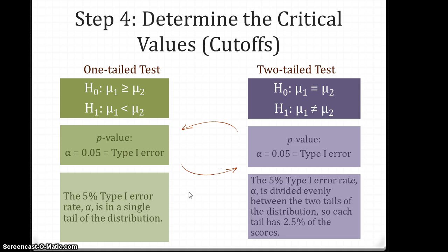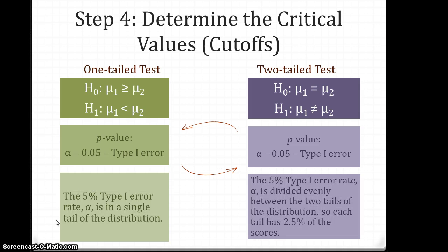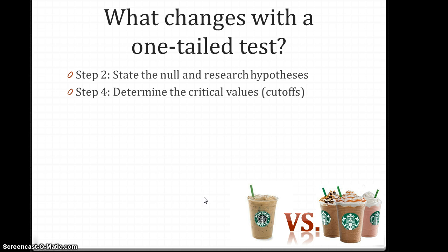With the one-tailed test, we put the entire 5% type 1 error rate, or alpha, in a single tail of the distribution. Remember, last time what we did was we took the 5% type 1 error rate and divided it evenly between the two tails of the distribution, so each tail has 2.5% of the scores.